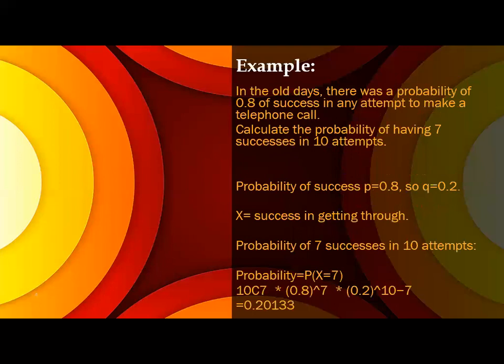We will see a simple example. In the old days, there was a probability of 0.8 of success in any attempt to make a telephone call. Calculate the probability of having 7 successes in 10 attempts. As per the properties, we will consider first success and failure: the call may be attended or not attended. That is clear.